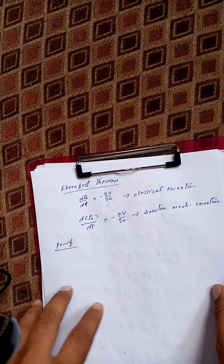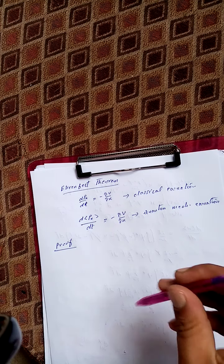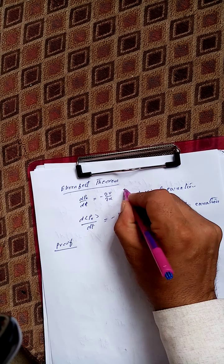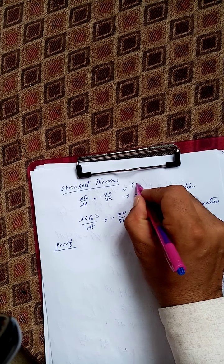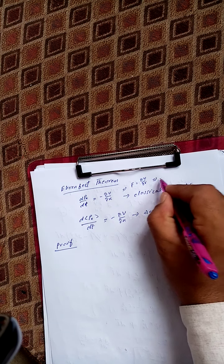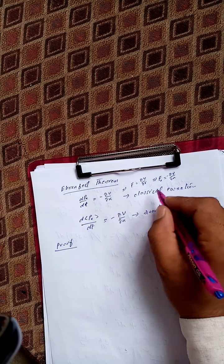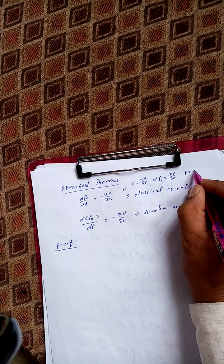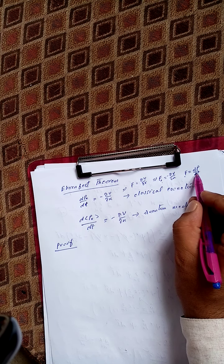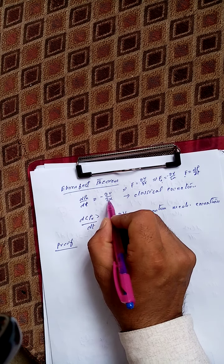Now we will move to the next part of the Ehrenfest theorem. The classical equation is dp_x/dt = -∂V/∂x. We get this equation from the fact that force is the negative gradient of potential. The force in the x-direction is -∂V/∂x, and since force equals dp/dt, we replace force by dp_x/dt, giving dp_x/dt = -∂V/∂x.